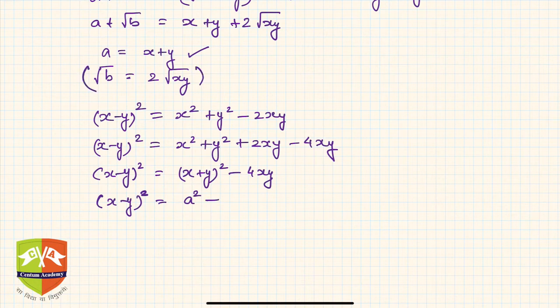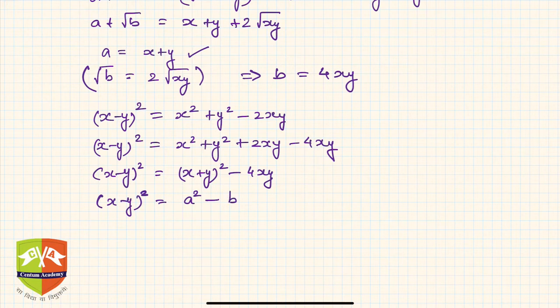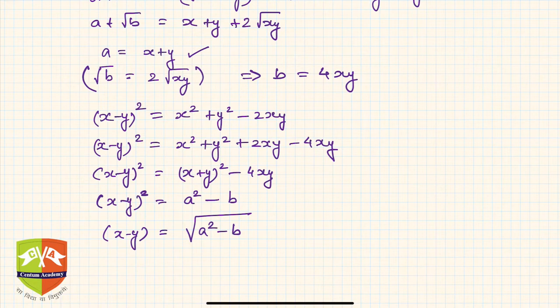Squaring the relationship √b = 2√(xy) gives b = 4xy, so 4xy = b. Therefore x − y = √(a² − b).